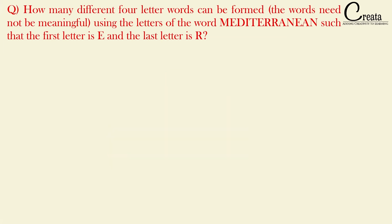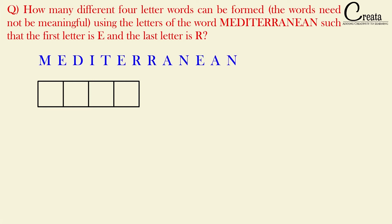Let's approach this question. We need to form a four-letter word using the letters of the word 'mediterranean', which is a 13-letter word. The condition is that the first letter must be E and the last letter must be R. We have four slots, with the first fixed as E and the last fixed as R, leaving only two vacant slots.